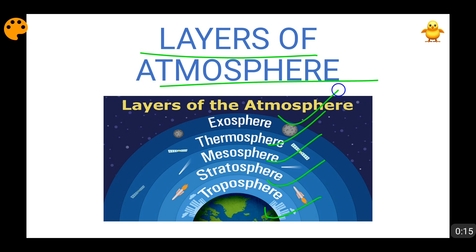There is one more layer named as ionosphere. Small parts of it lie in the mesosphere and then it comes in the thermosphere. All of these things will be discussed in detail. I will give you a slight idea and then videos with respect to troposphere and stratosphere I will be making separately because both of these layers actually have very specific properties.